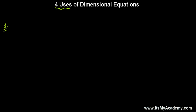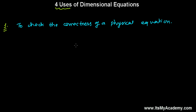The first use of Dimensions and Equations is to check the correctness of an equation — to check the correctness of a physical equation. How do we check the correctness of a physical equation? As we were discussing in the Principle of Homogeneity, in any physical relation, on both sides of the equals sign, all the terms should have the same dimensions. So that principle we use to check the correctness of a physical equation.